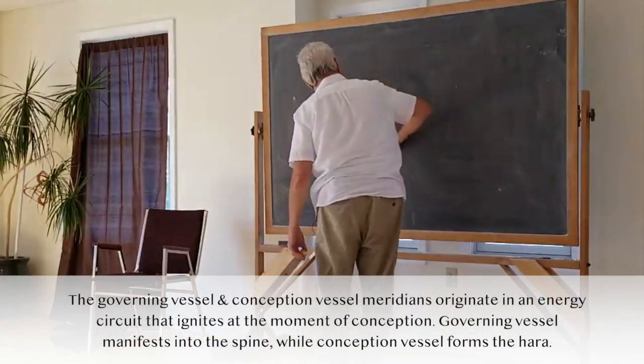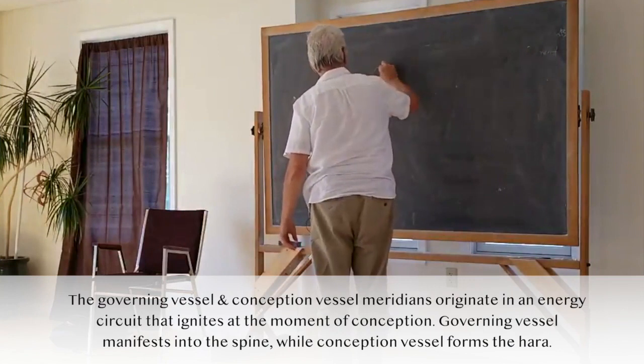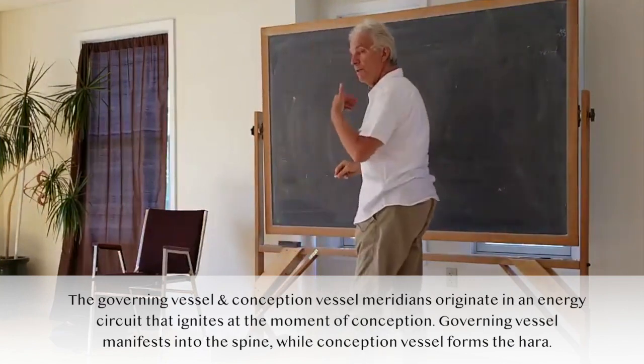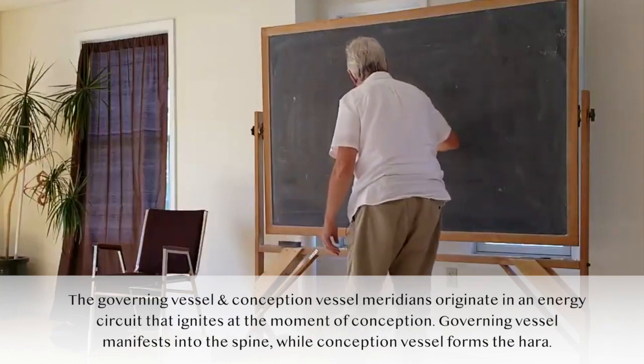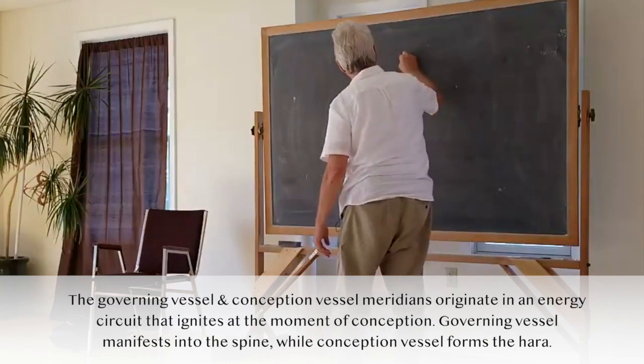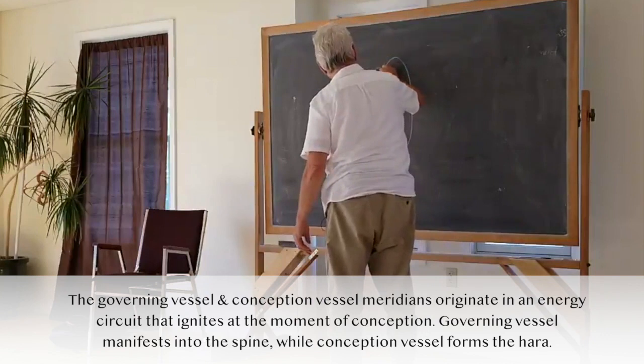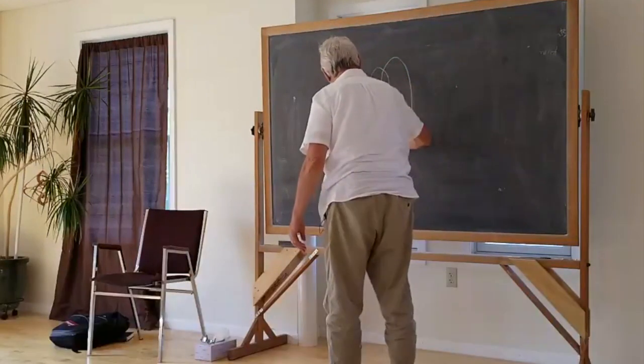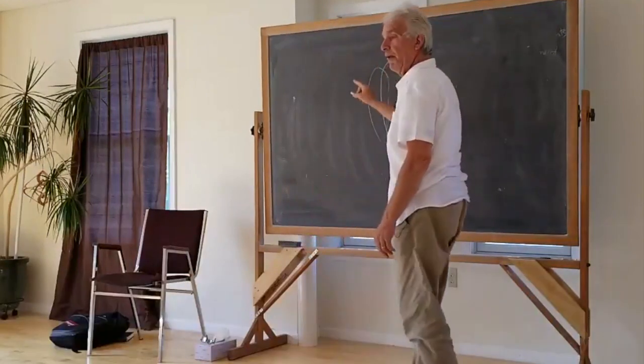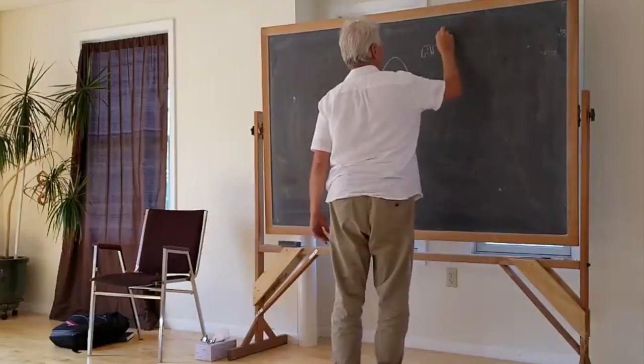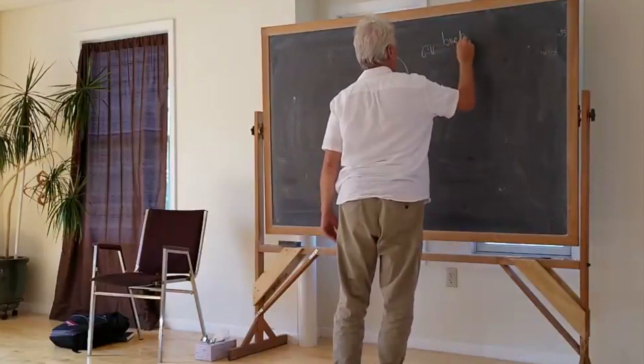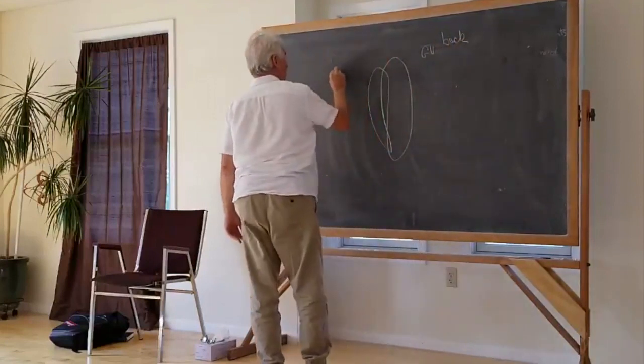You have a conception vessel that comes up the mouth and down through the center of the body. It exits at the perineum, goes up the back, over the top of the head, and in through the mouth. It's like a figure eight loop - GV the back, CV the front.